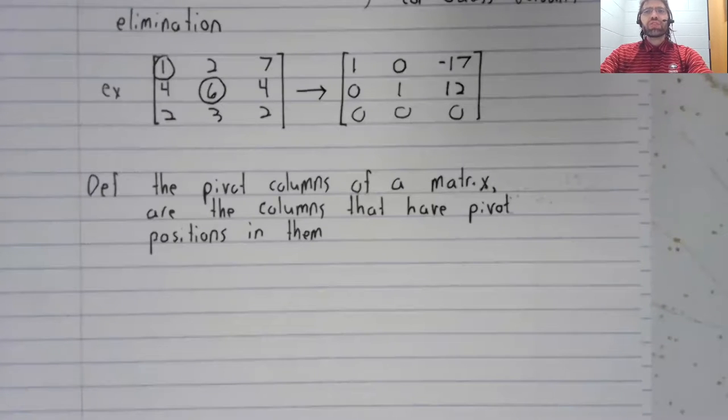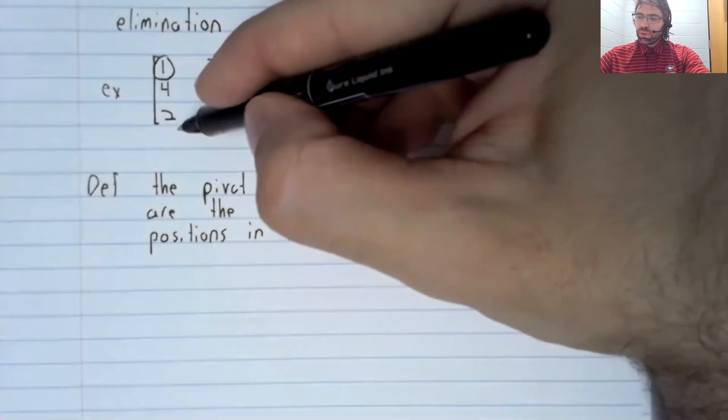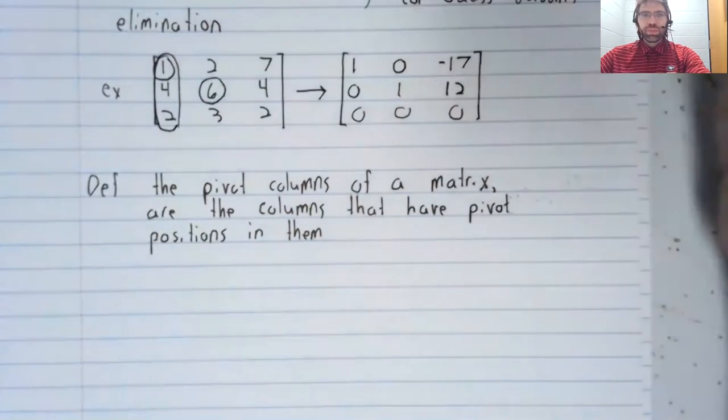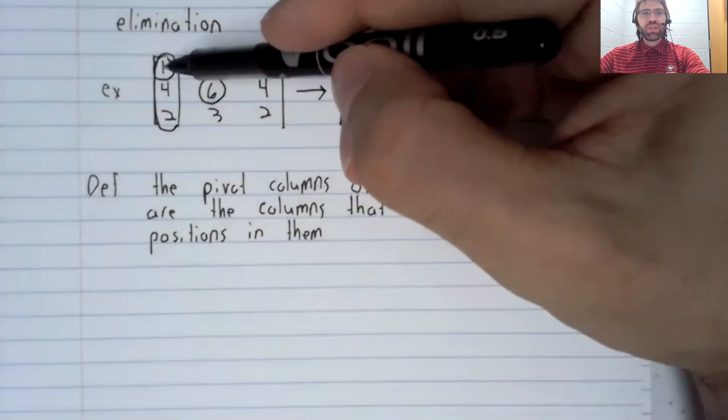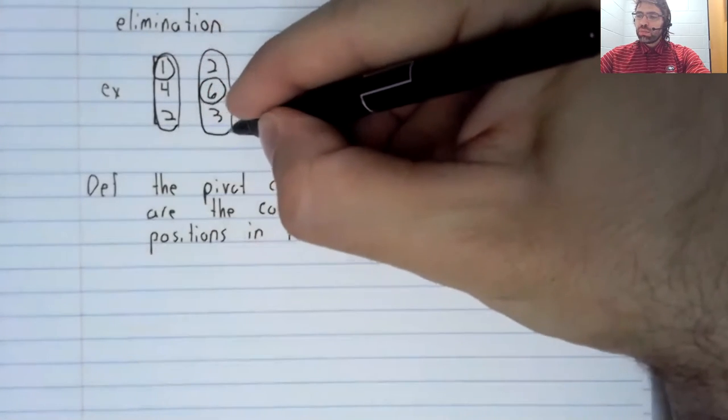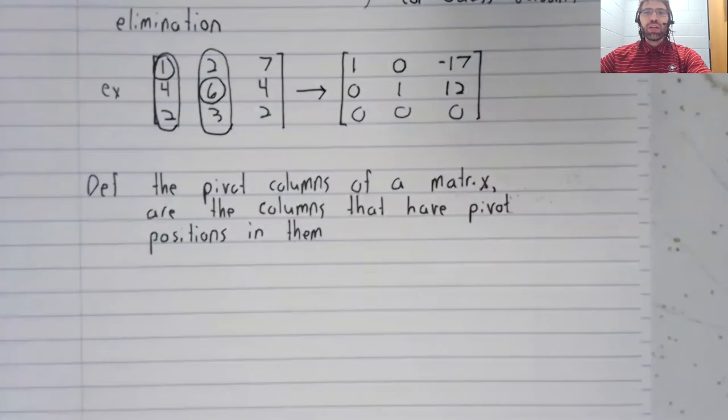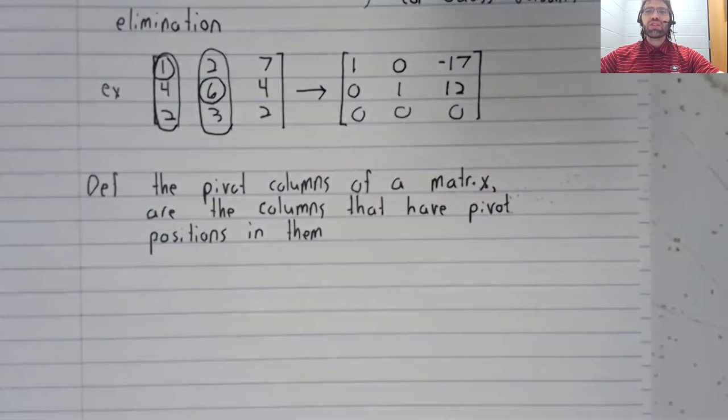The pivot columns of a matrix are the columns that have pivot positions in them. So again, keeping with this example, the first column is a pivot column because of this pivot position. The second column is also a pivot column, thanks to this pivot position. The third column is not a pivot column; it doesn't have any pivot positions in it.